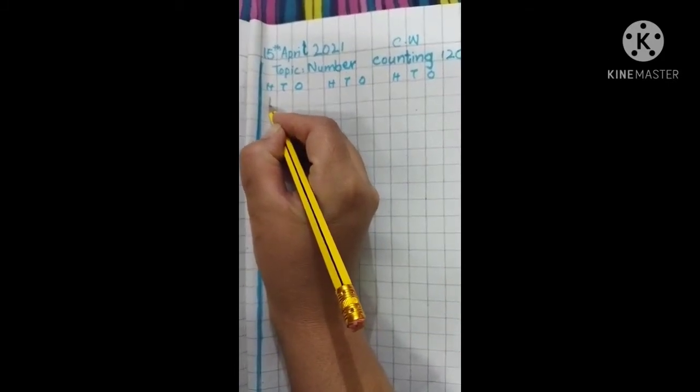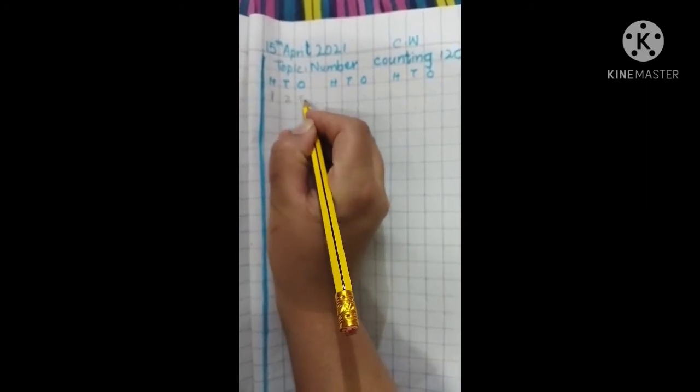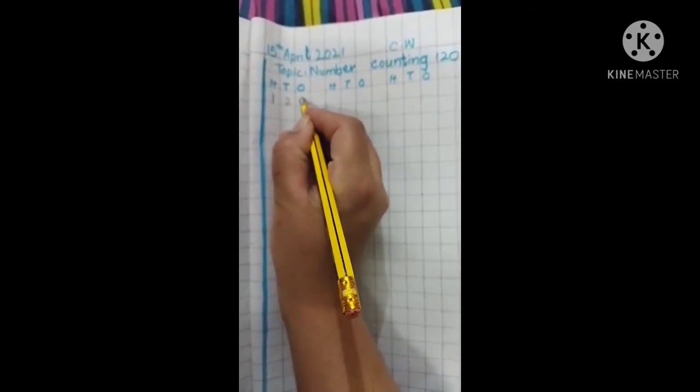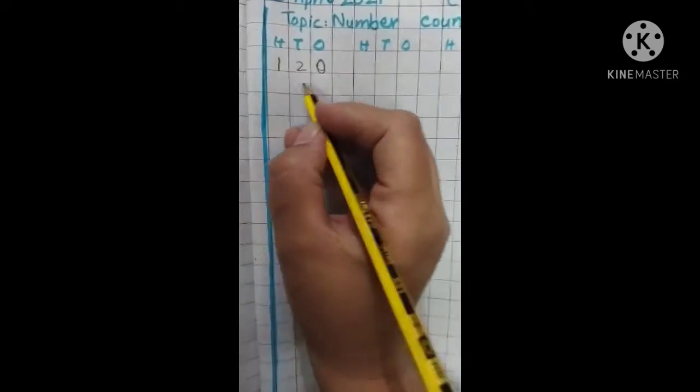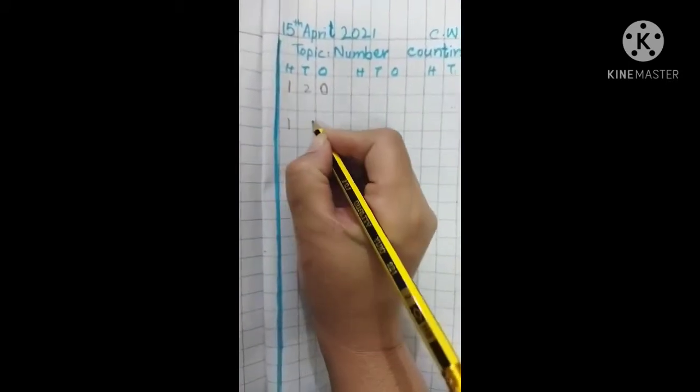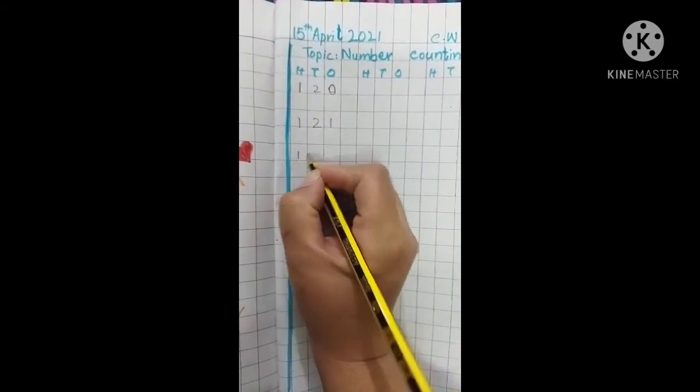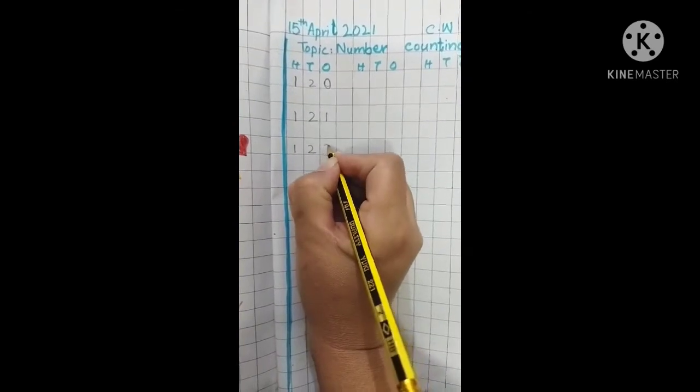First, you will write 1, 2, 0 - 120. Leave this space, this block, and come down. Now you will write 121, 122.